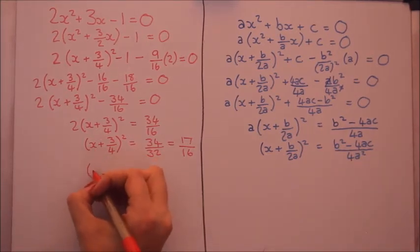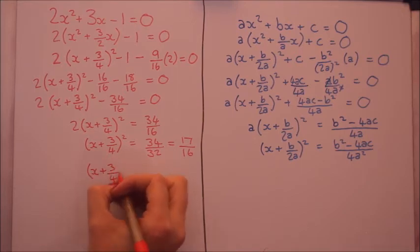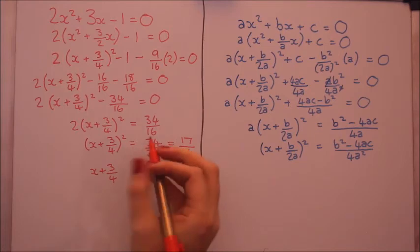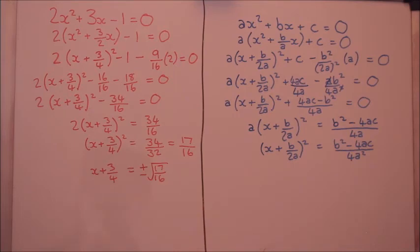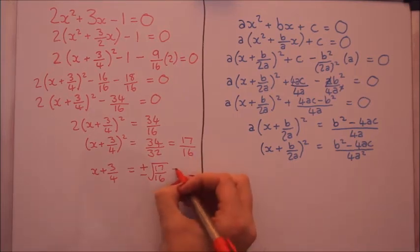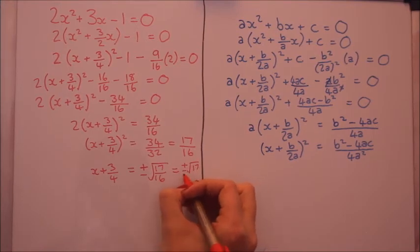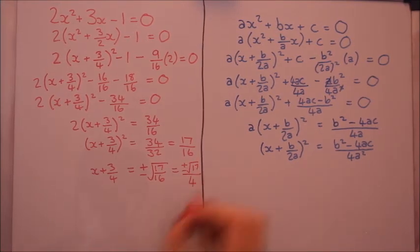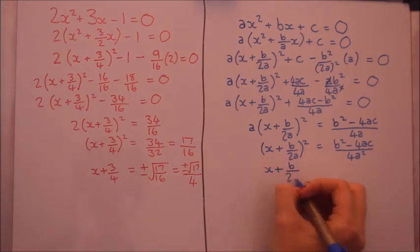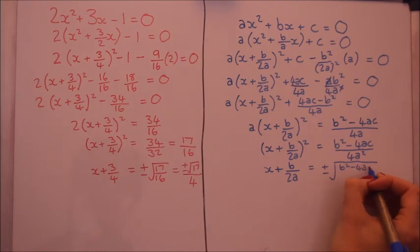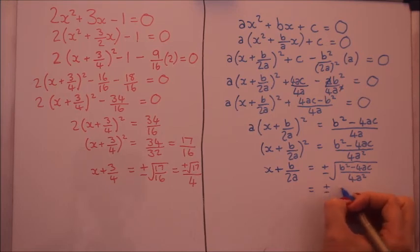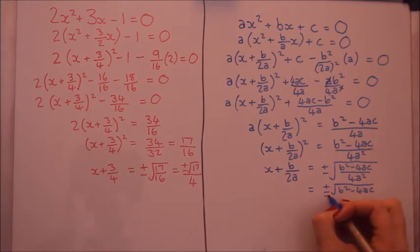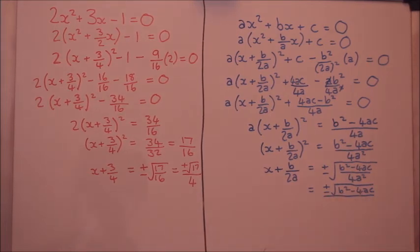Now we can square root. Now don't forget, when you square root, you get a positive and negative. Now I can simplify that a bit because we'll keep the plus minus root 17 on top, but root 16 we know is 4. Similarly over here, we'll keep the positive and negative b squared minus 4ac, but the bottom, the denominator we can square root, square root of 4a squared will be 2a.